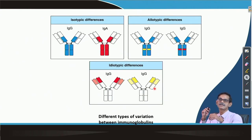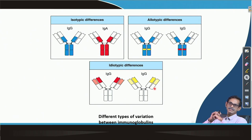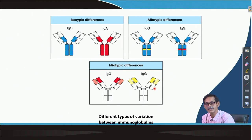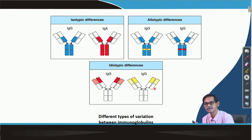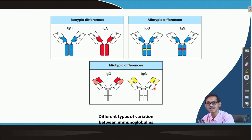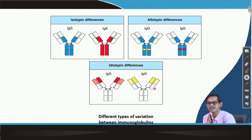Next we will see some more information regarding antibody structure, so that we can conclude the antibody topic. During the humoral immunity or B-cell mediated immunity section, we will see in detail how exactly IgM is converted to IgG or IgA when required. For now, there are three things to remember.